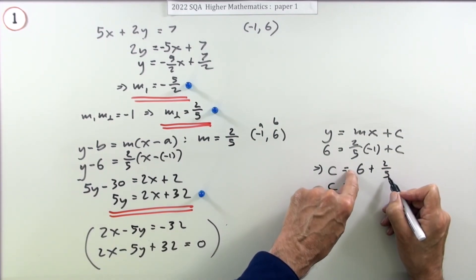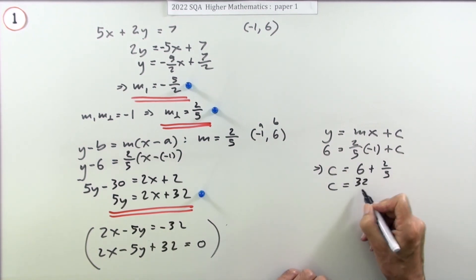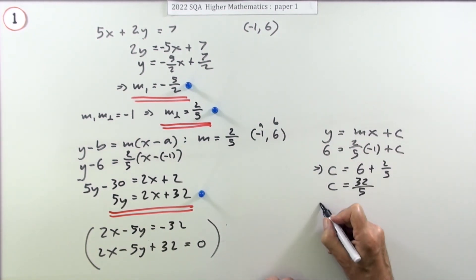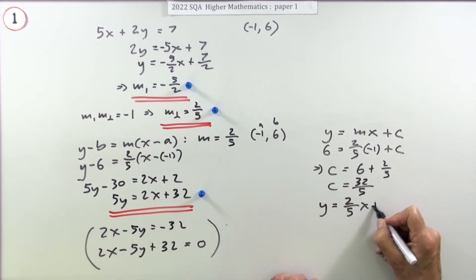C equals, adding that into fifths, that'll be 30 fifths - 5 times 6 is 30 - plus 2, 32 upon 5. So y equals 2/5 of x plus 32 upon 5. That would do as well.